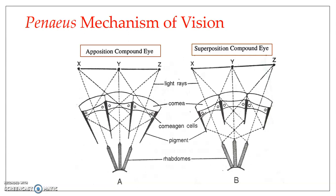This kind of vision is known as mosaic vision because it resembles mosaic artwork. Now, depending upon the different intensities of light, the compound eyes may work differently.